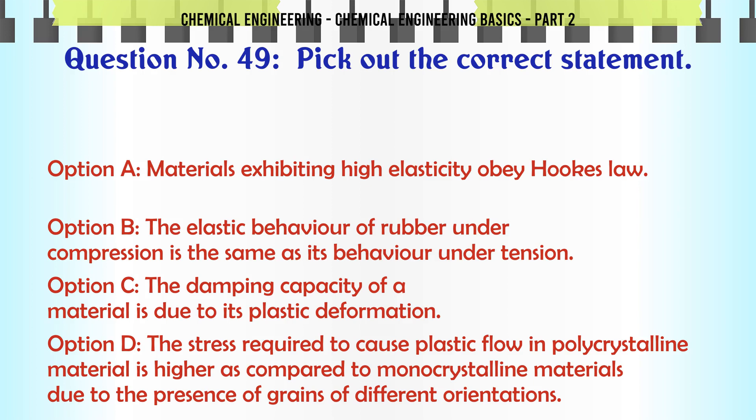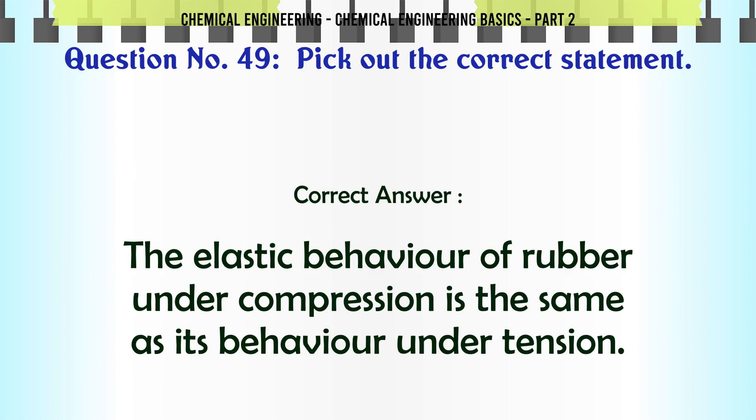Pick out the correct statement: a) materials exhibiting high elasticity obey Hooke's law, b) the elastic behavior of rubber under compression is the same as its behavior under tension, c) the damping capacity of a material is due to its plastic deformation, d) the stress required to cause plastic flow in polycrystalline material is higher compared to monocrystalline materials due to grains of different orientations. The correct answer is: the elastic behavior of rubber under compression is the same as its behavior under tension.